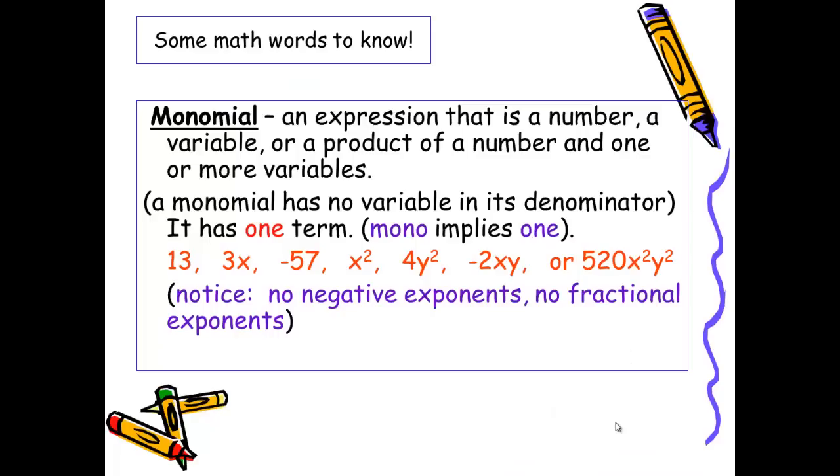Last week we talked about monomials. As a reminder, an expression that is a number, variable, or a product of numbers and one or more variables is called a monomial. Monomials have no variables in the denominator. Therefore, they do not include fractions that have a variable in the denominator. Mono implies one. Monomials cannot include negative exponents either. There are several examples here. If you have room on your notes, include at least two or three.